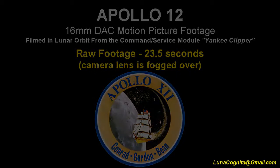This particular sequence was exposed through a window on the command service module while the spacecraft was in lunar orbit above the moon. Unfortunately, this raw footage as officially archived by NASA does not reveal a whole lot to us, because the space agency claims this footage was accidentally ruined when the lens of the 16mm DAC sequence camera somehow became unintentionally fogged over shortly before filming began.